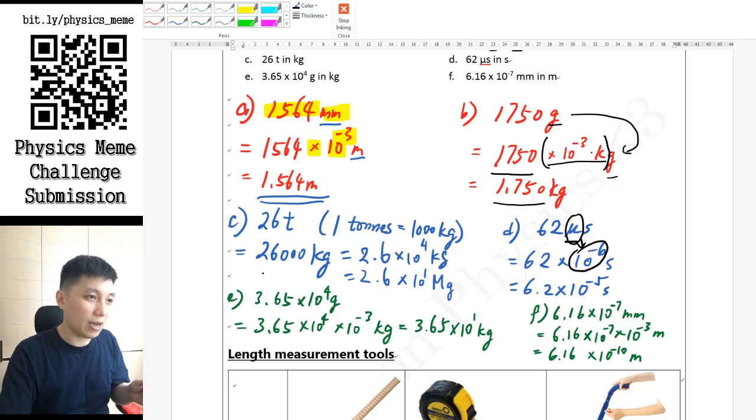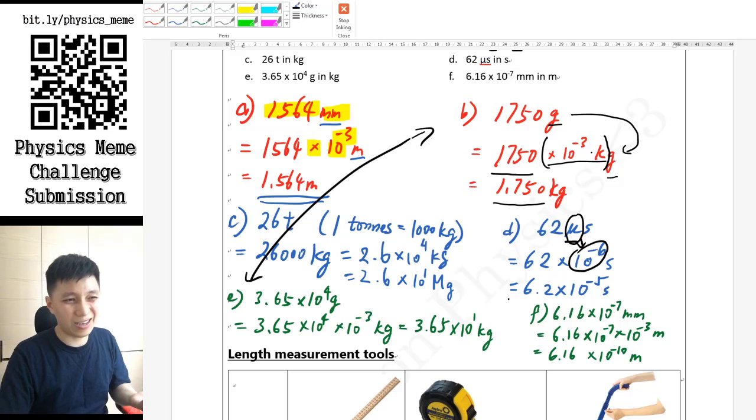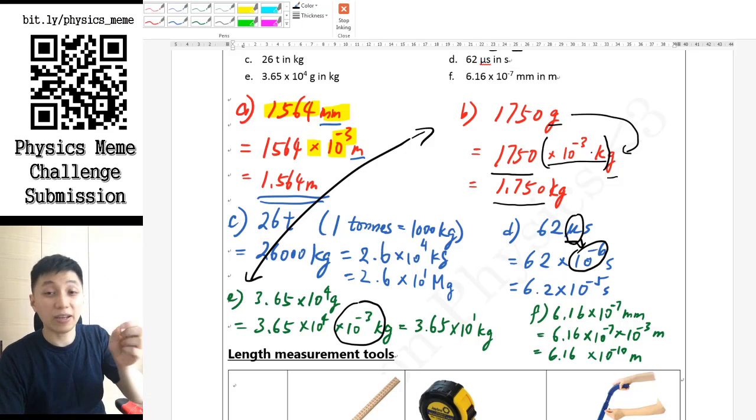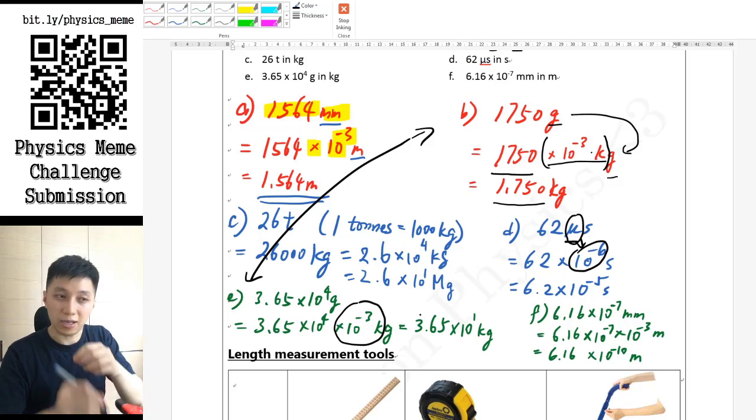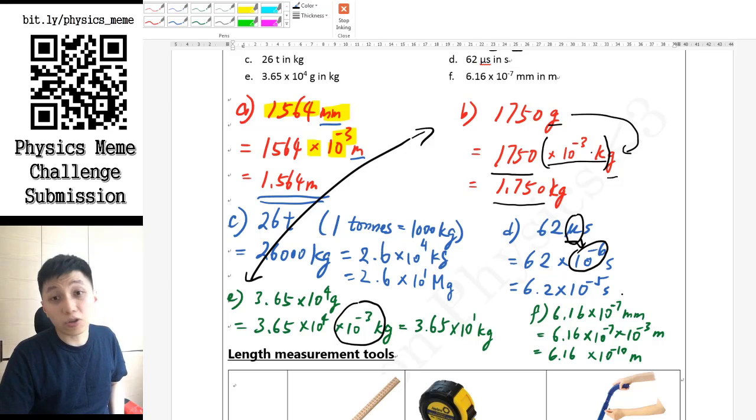At last, for part e, it will be similar to part b because you're also changing from gram to kg. I think I won't go through the details again, but again, the most important step is you can write down 10 to the power of negative 3 and k, and when they multiply, it equals 1.